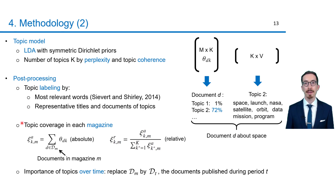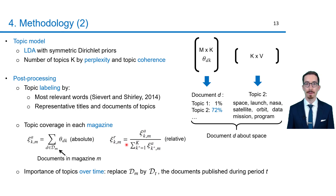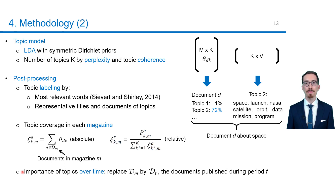Besides identifying topics, I wanted to know the topic coverage in each magazine and the importance of topics over time. Therefore, the absolute importance of a topic in a magazine is computed by the sum of the corresponding topic proportions for all documents in this magazine. The relative importance of a topic is computed by normalizing these absolute values. The importance of a topic over time is computed similarly, but by summing over the documents published during the considered period.